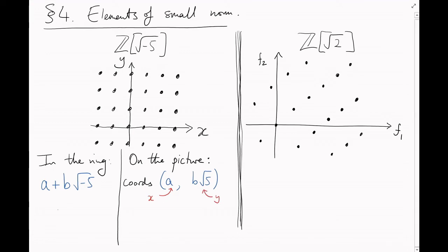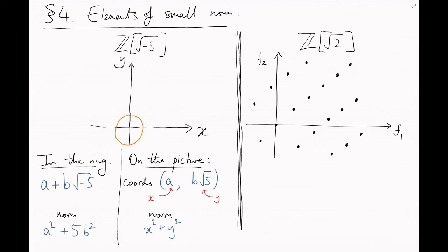The element a plus b root minus 5 has x-coordinate a and y-coordinate b root 5. The element a plus b root minus 5 has norm a squared plus 5b squared. And we can recover that from the coordinates x comma y by just forming x squared plus y squared. Let me just hide the points on this diagram to make it easier to show the geometry. Where in this picture are the elements of norm 1? Well, they lie on the curve x squared plus y squared equals 1, which is this circle. Similarly, here are the elements of norm 2, here are the elements of norm 3, and so on.